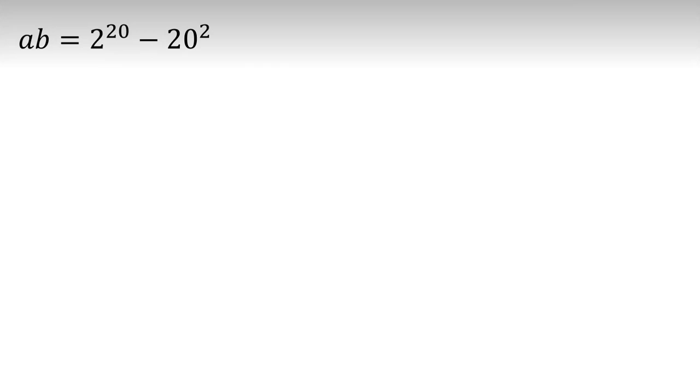AB equal to 2 to the 20 minus 20 squared, and A and B are integers. We want to find the number of answers, number of A and B.